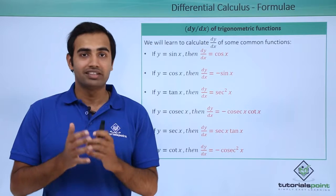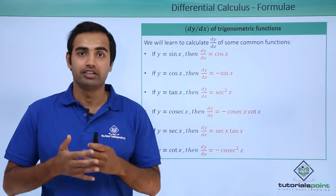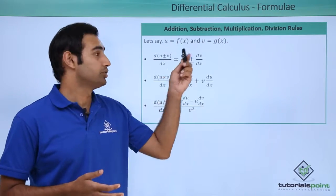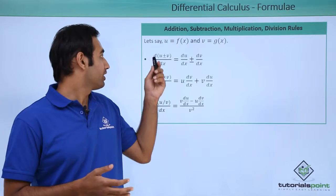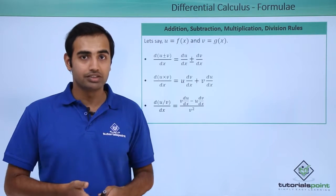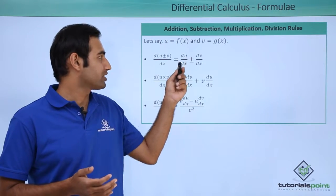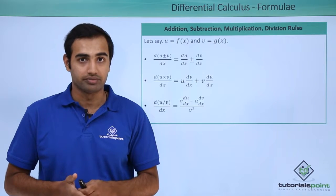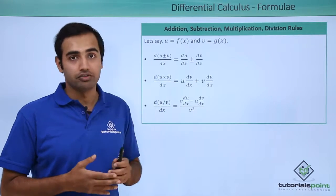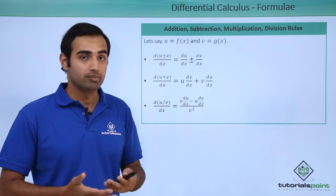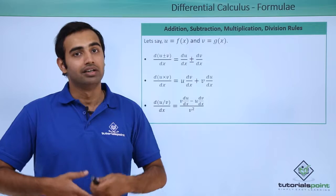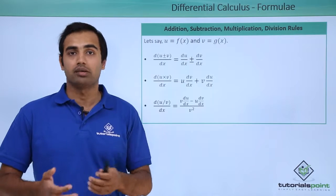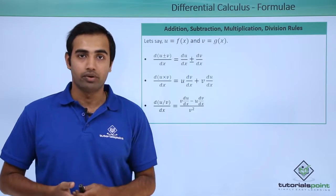Now let's talk about addition, subtraction, and multiplication rules used when differentiating multiple functions. Taking two functions f(x) and g(x) as u and v respectively: d/dx(u ± v) = du/dx ± dv/dx — the differentiation operator distributes across the functions. For a product: d/dx(u·v) = u·(dv/dx) + v·(du/dx). For a quotient: d/dx(u/v) = [v·(du/dx) − u·(dv/dx)] / v². These formulae are very important and will be frequently used.